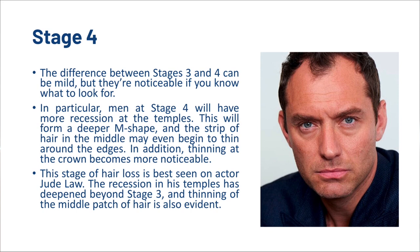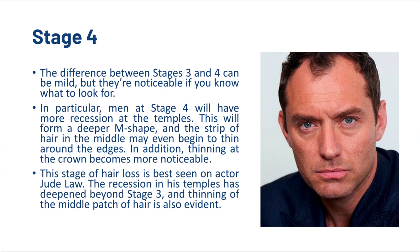Stage 4: the difference between stages 3 and 4 can be mild, but noticeable if you know what to look for. Men at stage 4 will have more recession at the temples, forming a deeper M shape, and the strip of hair in the middle may even begin to thin around the edges. In addition, thinning at the crown becomes more noticeable. This stage of hair loss is best seen on actor Jude Law — the recession in his temples has deepened beyond stage 3, and thinning of the middle patch of hair is also evident.